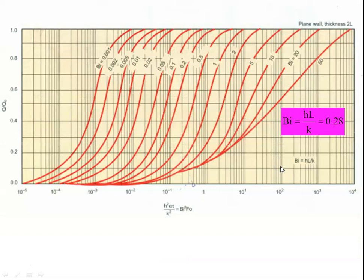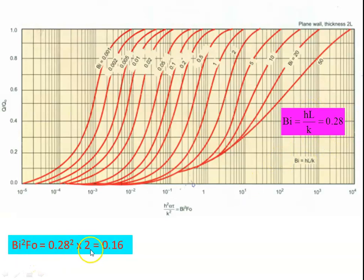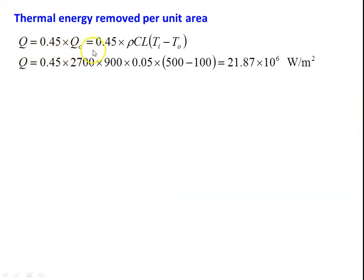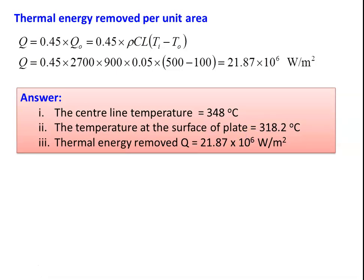To calculate the heat transfer using the Grober chart: Bi² × Fo = (0.28)² × 2 = 0.16. Draw a vertical line at Bi² × Fo = 0.16, meeting the Bi = 0.28 line, then draw a horizontal line giving Q/Q_O = 0.45. Therefore Q = 0.45 × Q_O = 0.45 × ρCL(T_i − T∞) = 0.45 × 2700 × 900 × 0.05 × (500 − 100) = 21.87 × 10⁶ W/m². Answer: centerline temperature is 348°C, surface temperature is 318.2°C, and thermal energy removed from the plate is 21.87 × 10⁶ W/m².